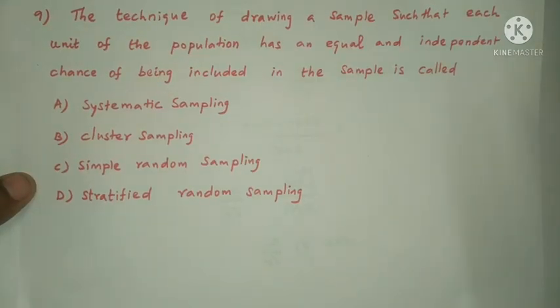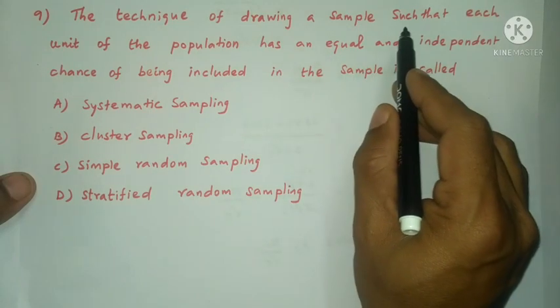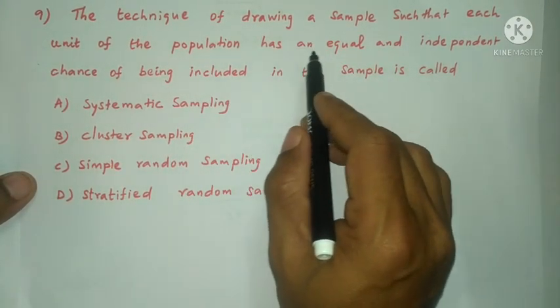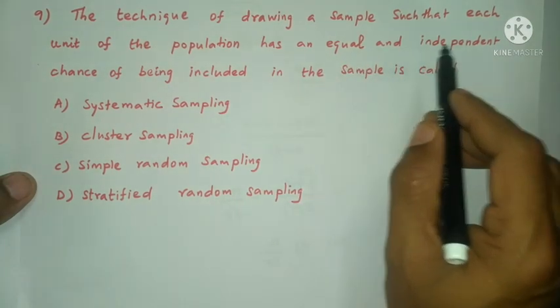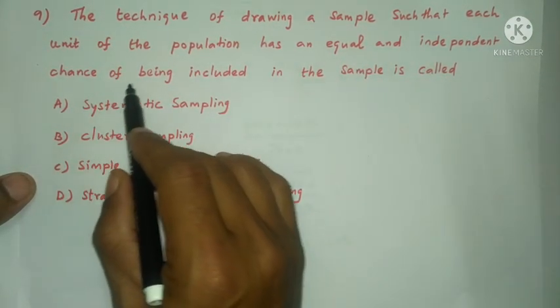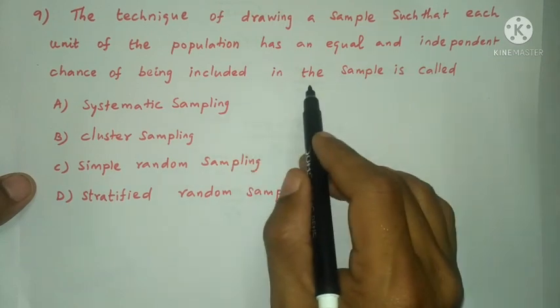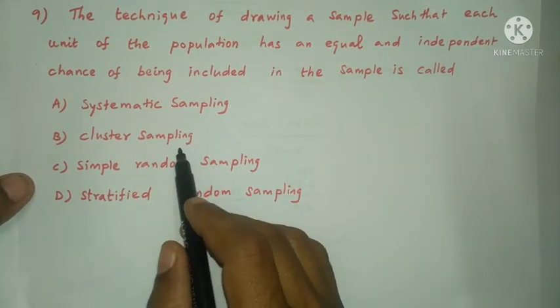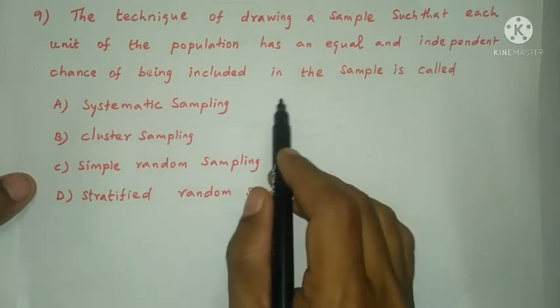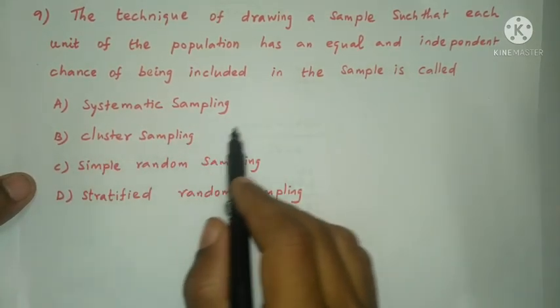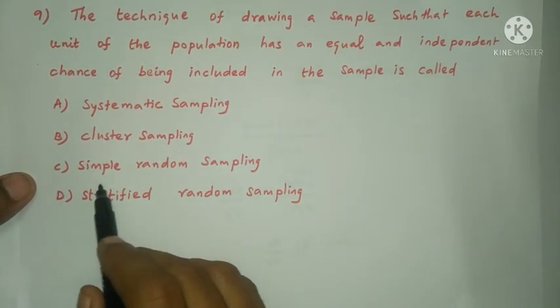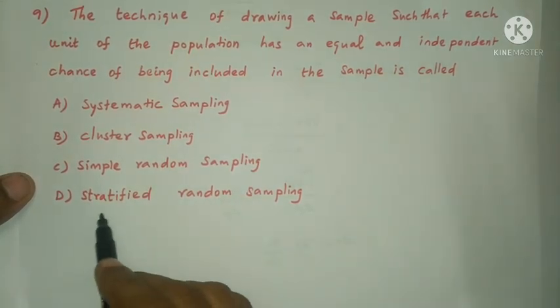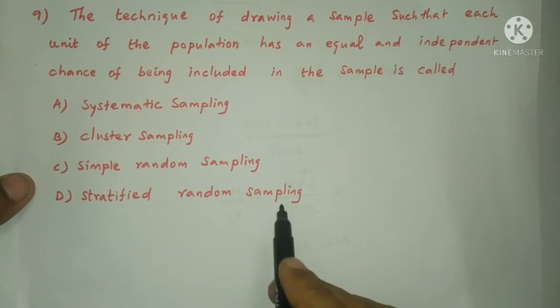Next question: The technique of drawing a sample such that each unit of the population has an equal and independent chance of being included in the sample is called. Option A, systematic sampling. Option B, cluster sampling. Option C, simple random sampling. Option D, stratified random sampling.